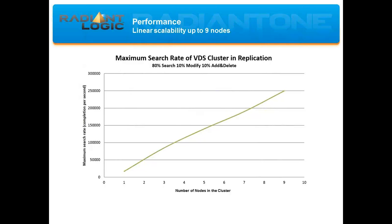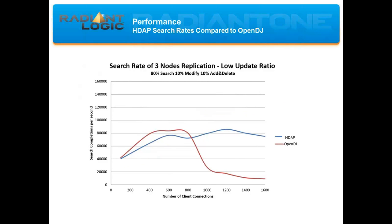When you look at performance throughput as the number of nodes in the cluster grows, you can see it scales up to at least nine nodes — the maximum we tested — where we were already seeing 250,000 queries per second. Just to give you an idea, Google currently handles about 70,000 searches per second, so reaching 250,000 is a massive amount of throughput. At that range we were starting to exhaust the bandwidth of the network.